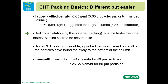Bed consolidation can be either flow or axial packing, and it just has to be faster than the fastest settling particle for best results. Since CHT is incompressible, once all particles settle to the bottom of the column, the column is packed. For 40 micron particles, the fastest settling particle is about 125 centimeters per hour, so you want to pack at 150 centimeters per hour. Packing faster than that provides no additional benefit. For 80 micron particles, however, you will need to go to 300 centimeters per hour.